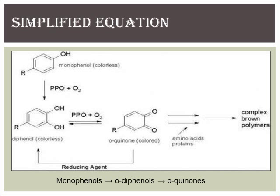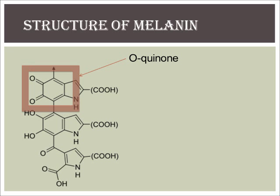Quinones then polymerise to form melanin. This is a simplified version of the actual reactions that take place during the formation of melanin. Monophenols are oxidised to form diphenols, which undergo a condensation reaction forming quinones. These in turn polymerise into melanin. The melanin formed in enzymatic browning is a brown pigment because it absorbs certain wavelengths of light, like blue, green or red, and reflects other wavelengths, appearing an overall brown colour.